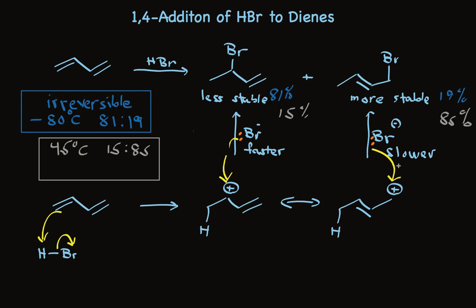Formation of the 1,2 product is faster but makes a less stable product. Formation of the 1,4 product is slower, so we see less of it under irreversible conditions. But when we have reversible conditions, and this bromide can leave again and reform the carbocation at the higher temperatures, ultimately it's not the faster formed product that dominates, but we have a predominant amount of the more stable product.